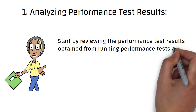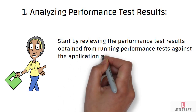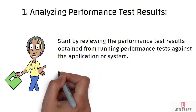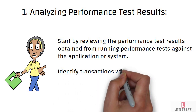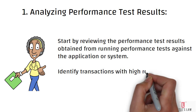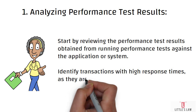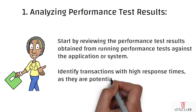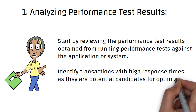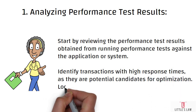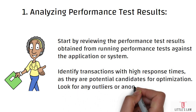Then you identify the transactions with high response times, because they are the potential candidates for optimization. We also have to look for any outliers or anomalies in the data that can indicate areas of concern. So before you do any analysis, you first collect all those responses and identify all those transactions with high response times which need to be optimized.